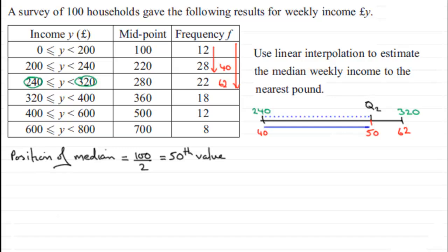So just mark that in with a dotted line there. I compare it to the equivalent width below, going from 40 to 50, and then that comparison is going to be exactly the same as comparing the width from 240 to 320, which I'm marking as a dotted line there, to the width from 40 to 62. So we set this out as an equation something like this: this dotted width here is going to be a width of Q2 minus 240.